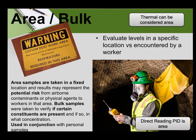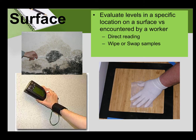Then finally there's surface sampling, which can be seen as a type of bulk sampling. It evaluates levels on a specific location. It is considered a wipe sample and can be done with direct reading instruments — for example, if there's lead in a paint, or surface beryllium readers. Or you can do a wipe sample, such as for mold, and send it to a lab for later analysis. Cadmium dust in a work area is another substance you can sample for.